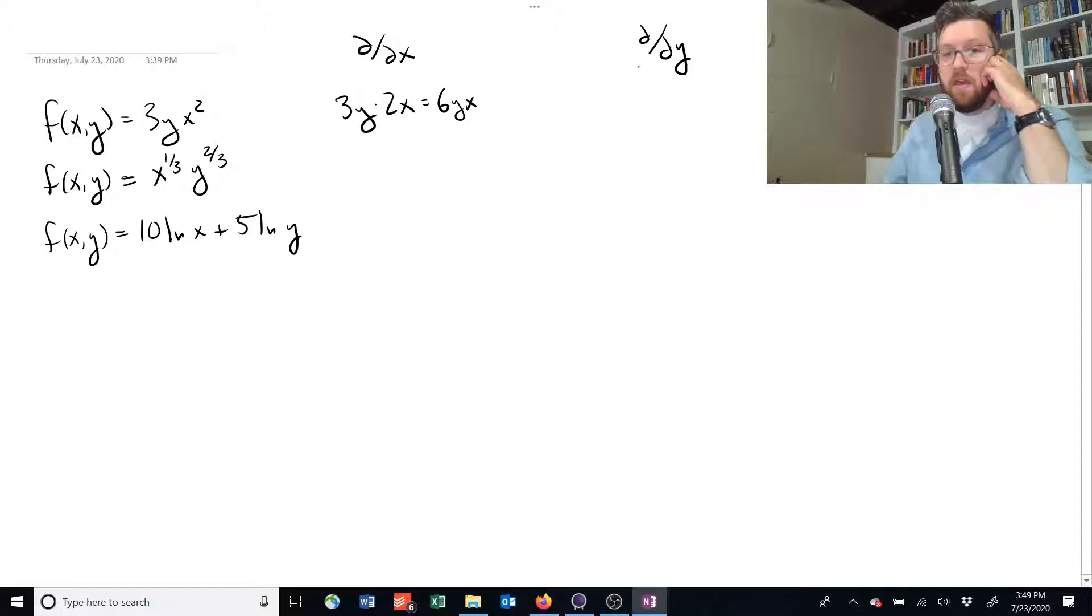And this can also be rewritten as six x y. If we take the derivative with respect to y, well, now we're going to leave the three alone. Take the derivative with respect to y, that's just one. And then we're going to leave the x squared alone now, because we're not taking the derivative with respect to x. And this is equal to three x squared. Okay, now let's focus on the next one.